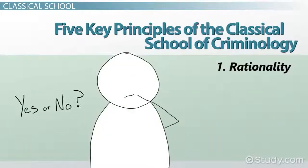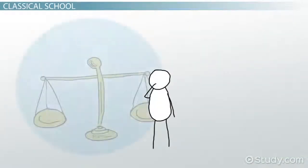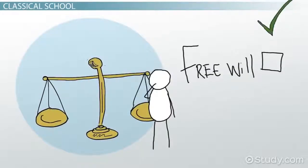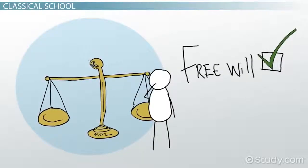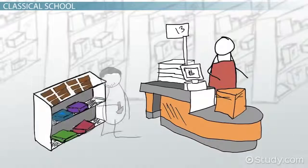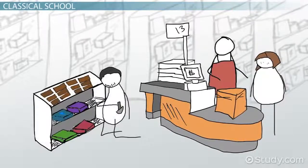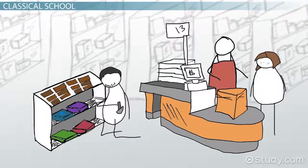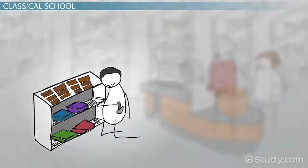Number one, rationality. The Classical School assumes that people have free will and that they choose to commit crimes. For example, if Jordan decides to steal some candy at the store, he is not forced to based on some predestiny. He chooses to steal that candy.